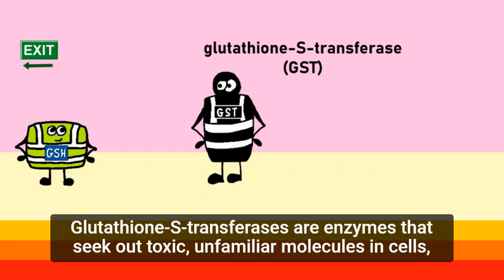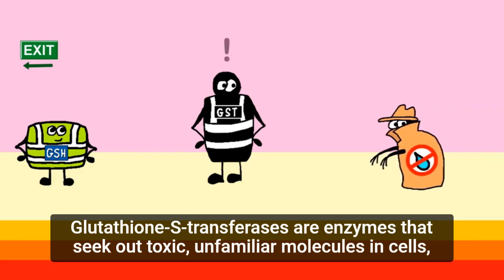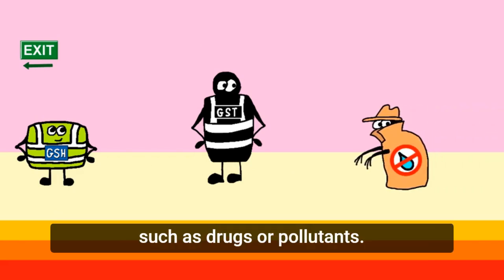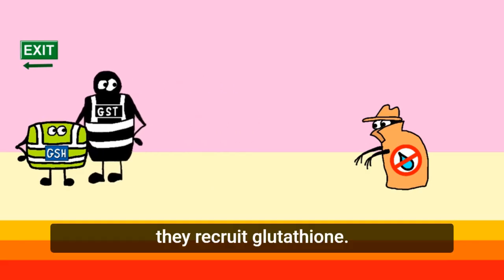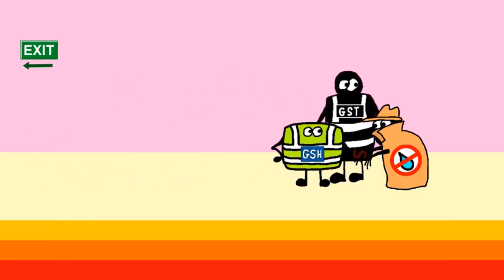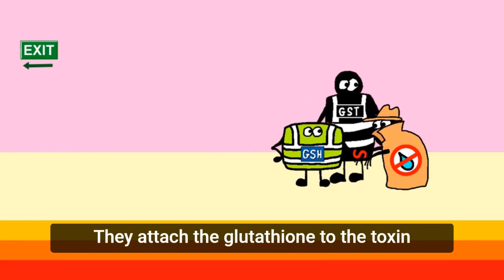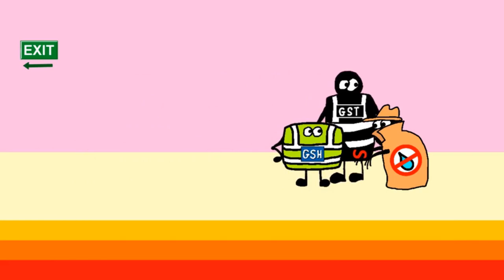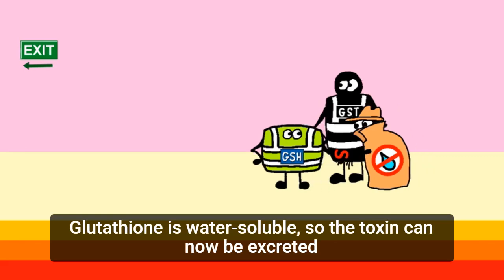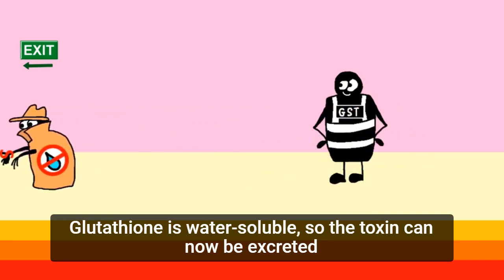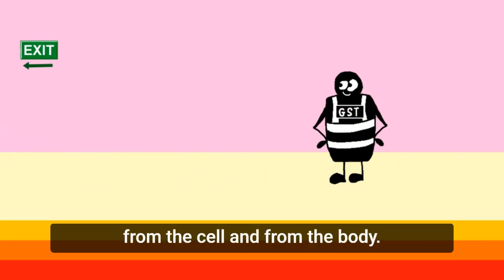Glutathione S-transferases are enzymes that seek out toxic, unfamiliar molecules in cells, such as drugs or pollutants. When they find a toxic molecule that is too hydrophobic to be excreted, they recruit glutathione. They attach the glutathione to the toxin via the sulfur group. Glutathione is water-soluble, so the toxin can now be excreted from the cell and from the body.